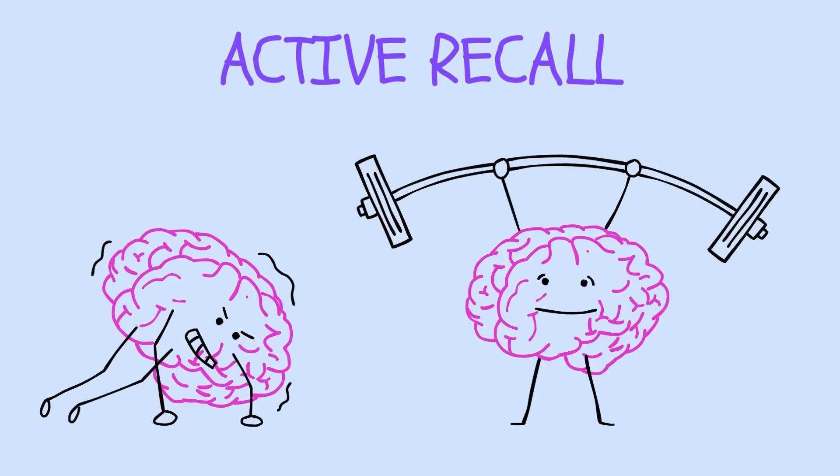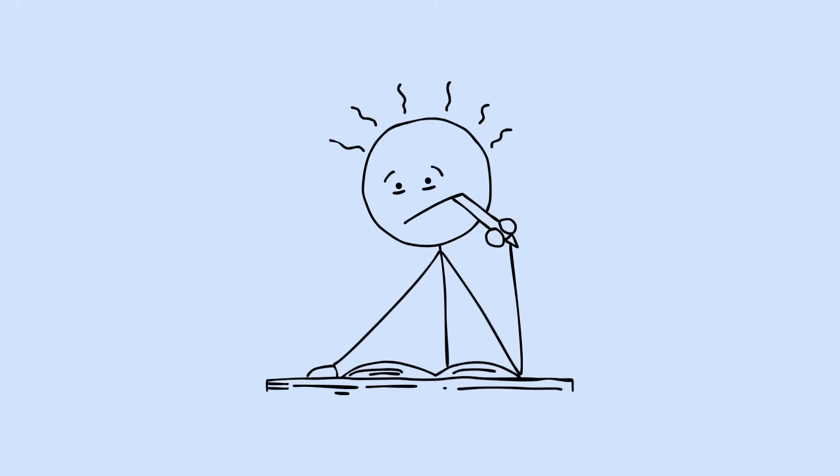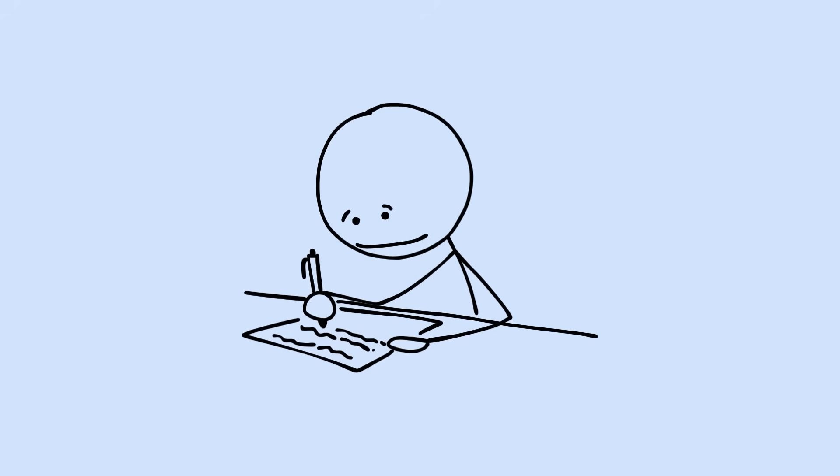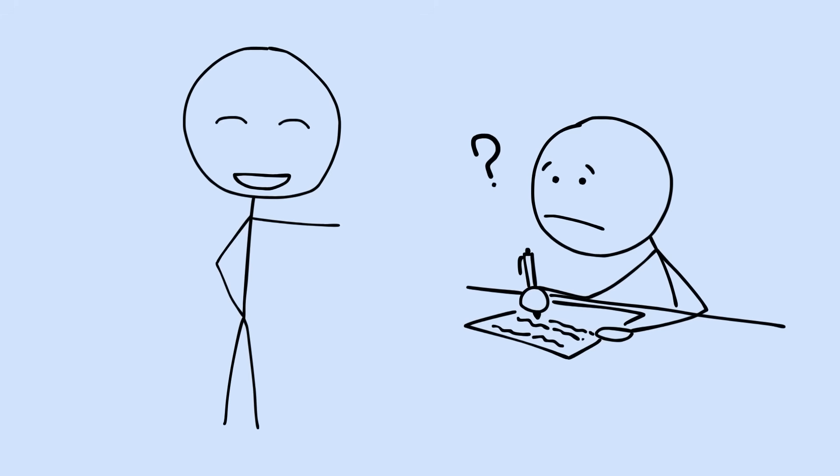Active recall is like CrossFit for your memory. Uncomfortable in the moment, incredibly powerful over time. Instead of reading your notes for the hundredth time, close the book and write down everything you remember. You'll feel stupid at first. That feeling means it's working.